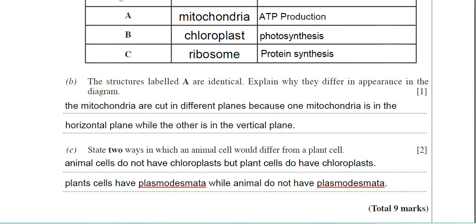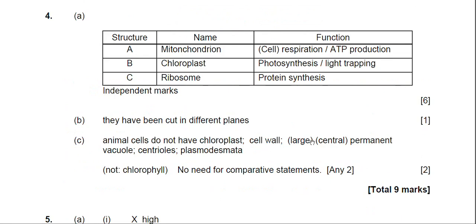So that's the end of question four. If we just have a quick look at the mark scheme then, there's the table for six marks. Straightforward enough. Part B, they've been cut in different planes and part C there, you have the different features of animal and plant cells. Now the examiner has stated in the mark scheme here, no need for comparative statements. But as you've seen in a previous video, the examiner did want comparative statements. So I just think it's good practice to make a comparative statement because you don't know that the examiner doesn't want comparative statements. So I think it's just good practice to put those in. I hope you found that of use.